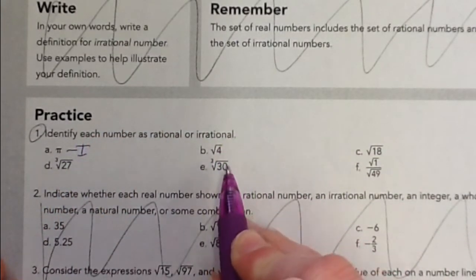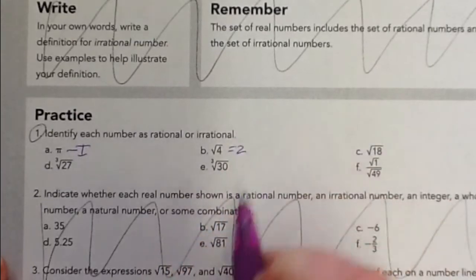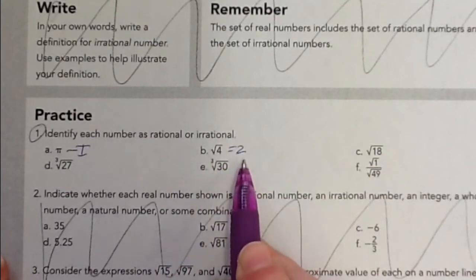B squared of 4, well, that's just 2, right? Because 2 squared is 4, so 2 is rational.